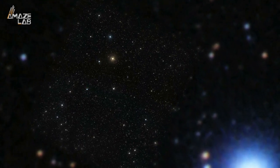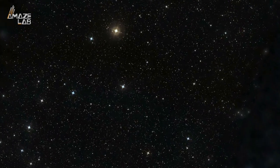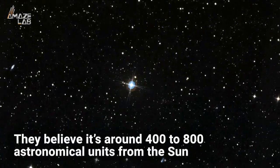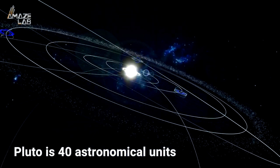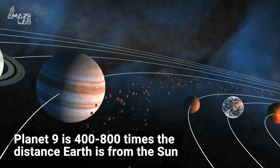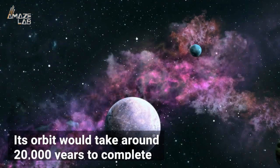So why can't we just look back that way with modern instrumentation and find it? Well, for starters, they believe it's around 400 to 800 astronomical units from the sun. For reference, Pluto is 40 astronomical units, meaning planet nine is 400 to 800 times the distance earth is from the sun and its orbit would take around 20,000 years to complete.